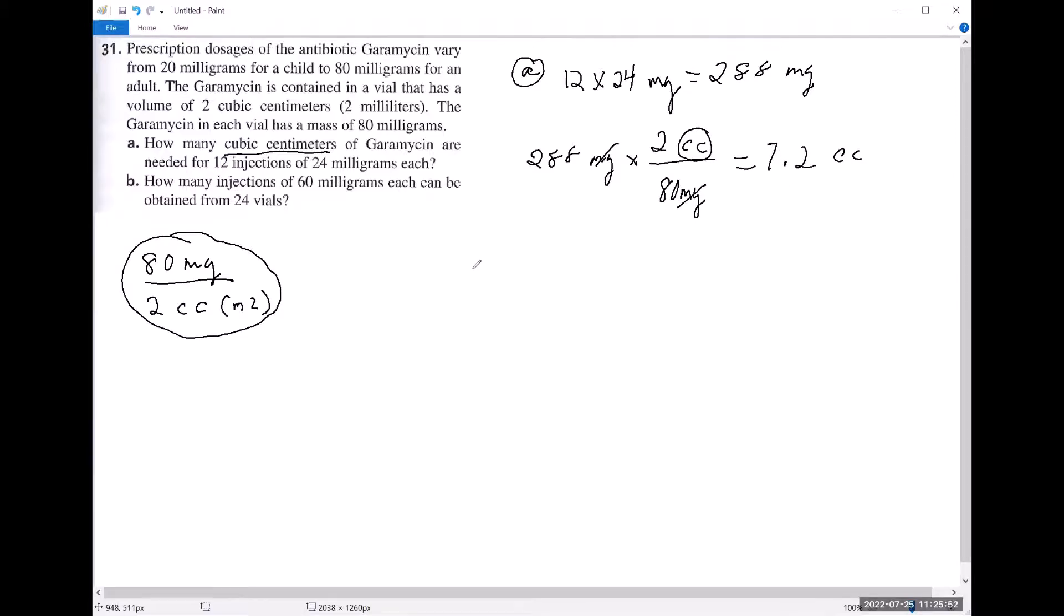Alright, let's try part B. This is how many injections of 60 milligrams each can be obtained from 24 vials. How many injections of 60 milligrams? That's actually going to be what we're dividing by.